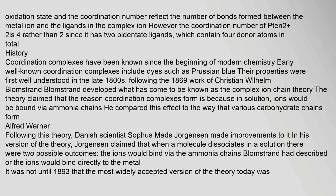Coordination complexes have been known since the beginning of modern chemistry. Early well-known coordination complexes include dyes such as Prussian Blue. Their properties were first well understood in the late 1800s, following the 1869 work of Christian Wilhelm Blomstrand. Blomstrand developed what has come to be known as the complex ion chain theory, which claimed that coordination complexes form because ions in solution would be bound via ammonia chains, compared to the way carbohydrate chains form.